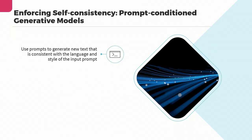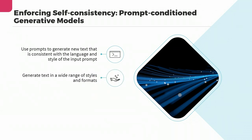One of the key benefits of prompt conditioning is that it can be used to generate text in a wide range of styles and formats. For example, a prompt-conditioned generative model could be used to generate product descriptions, marketing copy, news articles, or even creative writing like poetry or fiction.